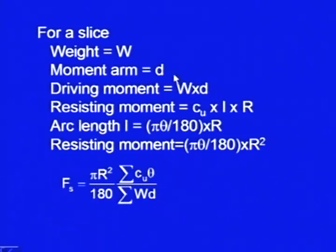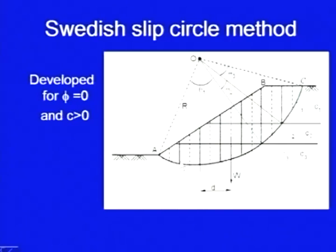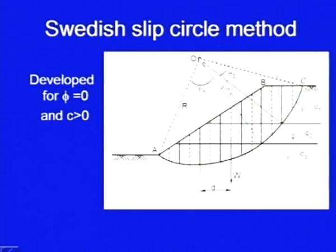So what we do in this case is divide the mass into different slices. Here you can see we have divided them: this is slice number 1, this is slice number 2, slice number 3, and so on. So let us say this is the nth slice and its weight W is acting here in the downward direction, and its distance of its CG from O — the moment arm or lever arm — is D.